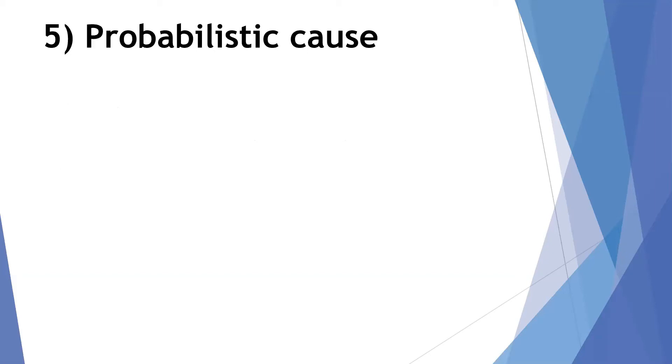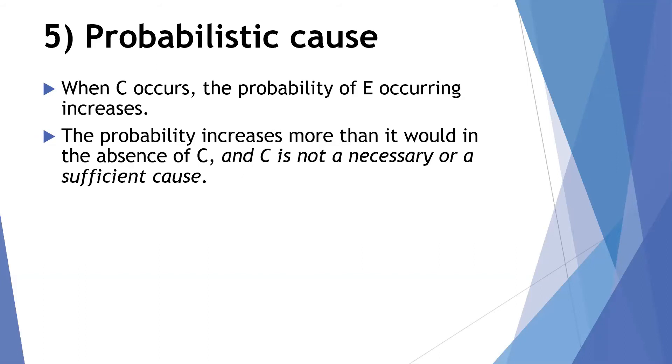A probabilistic cause, as you might imagine, when you have C, the cause is there, the probability of the effect occurring increases. So when you have C, the likelihood that you will have E increases. So the probability increases more than it would in the absence of C. Now, we also need to add this clause.